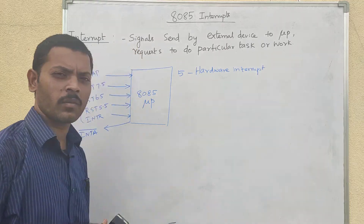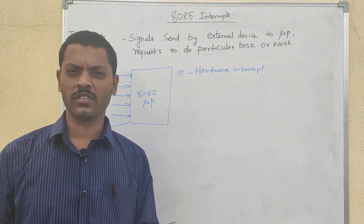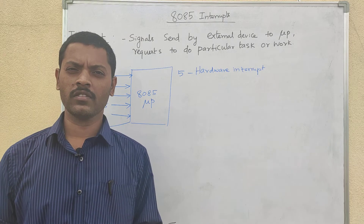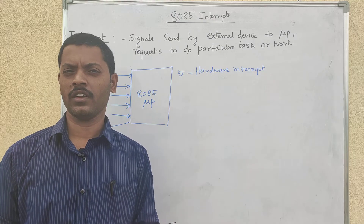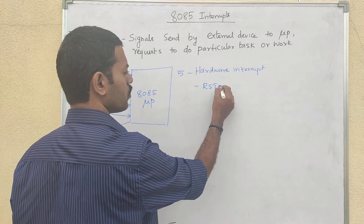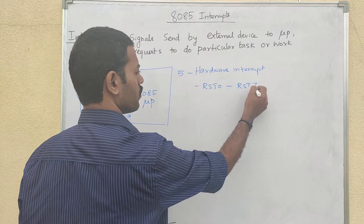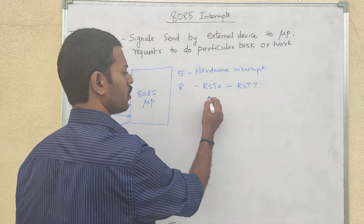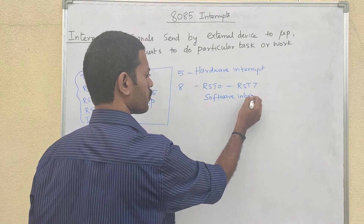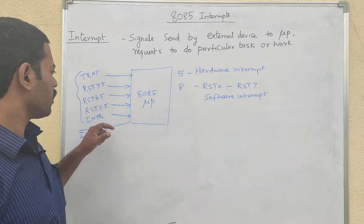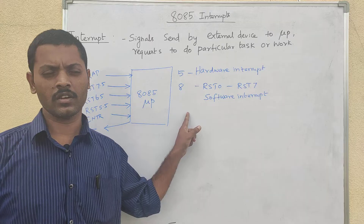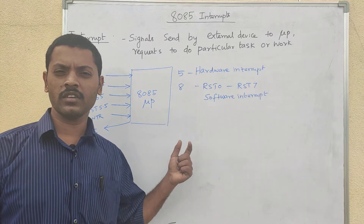In addition, we have software interrupts RST0 to RST7 — a total of 8 software interrupts. For the 8085 microprocessor, 8 software interrupts plus 5 hardware interrupts gives a total of 13 interrupts.